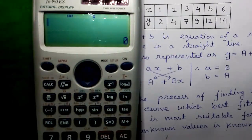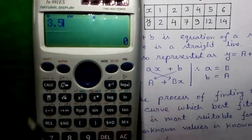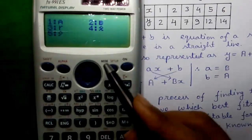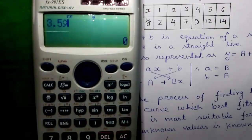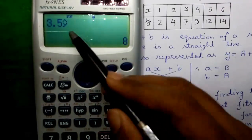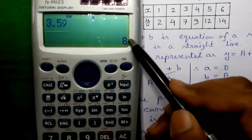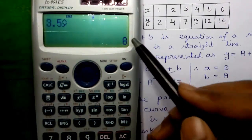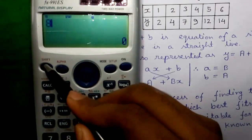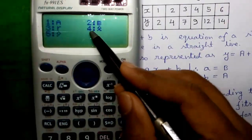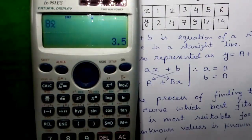Next, we will find out the value of Y for X = 3.5 on the calculator. Enter 3.5, press Shift, 1, 7, and press 5 for Y hat, then press equals. So for X = 3.5, Y is 8. You can also do the reverse calculation — find out the value of X for a given value of Y. For Y = 8, what is the value of X? Press Shift, 1, 7 and 4 for the estimated value of X. So for Y = 8, X is 3.5. Isn't it cool?